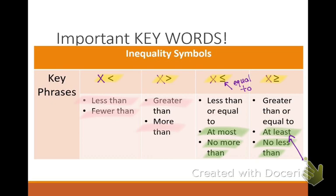You must be at least 18 years old to vote. What does that mean about all the acceptable ages? Give me an acceptable age — 30, right. That means all the ages, if they have to be at least 18, must be greater than or equal to 18. So if I learn what these phrases mean, I know what symbol I need to use.